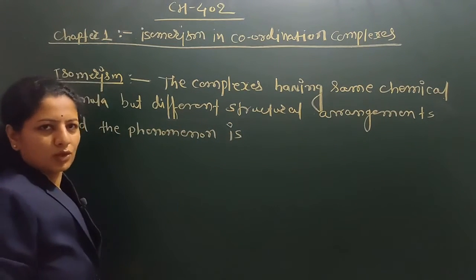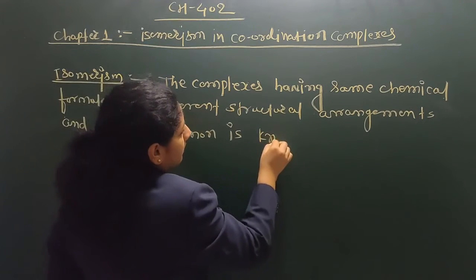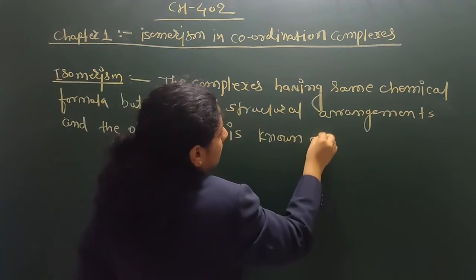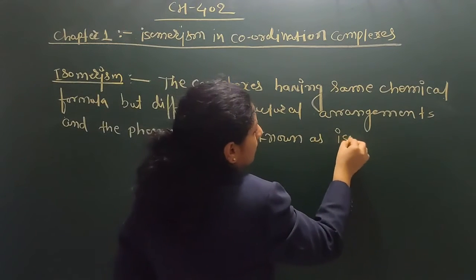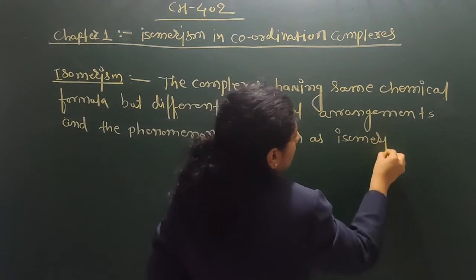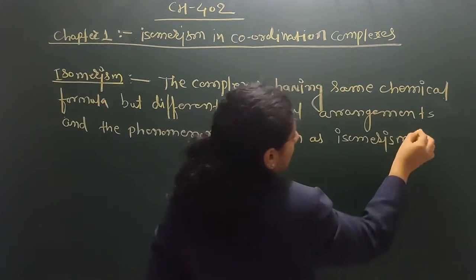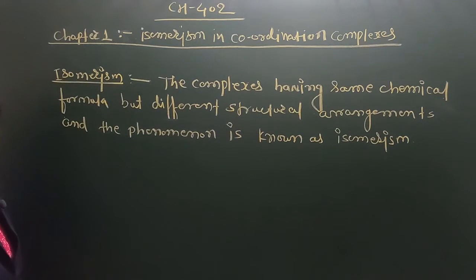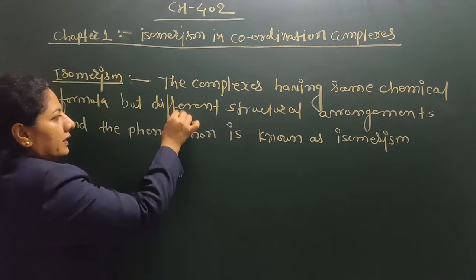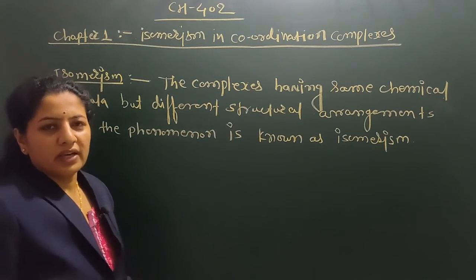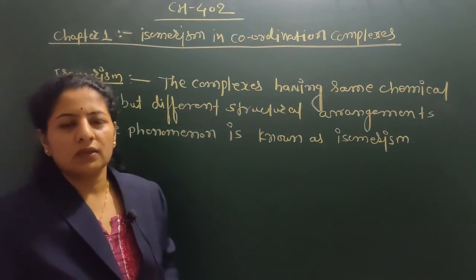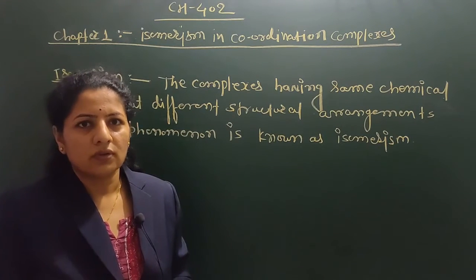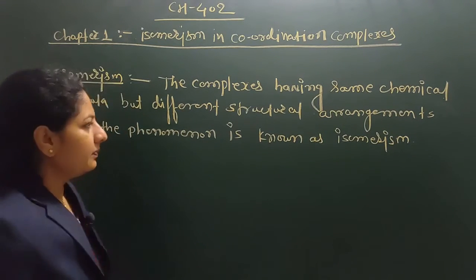So there are different types of isomerism. There are various isomerisms in coordination number 4 and coordination number 6. So let's discuss the types of isomerism.